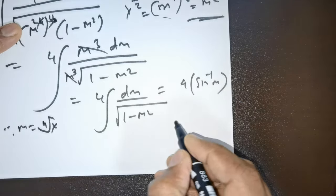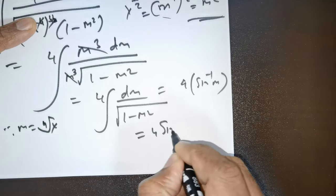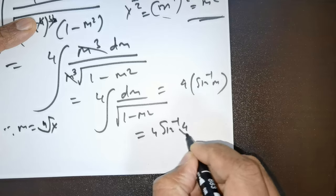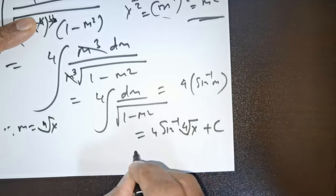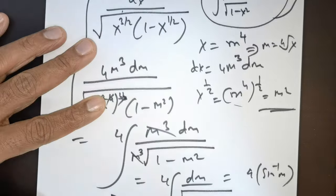Substitute that, m equals fourth root of x. If you substitute that, this becomes 4 times sine inverse of fourth root of x plus arbitrary constant c. That's the solution for this question.